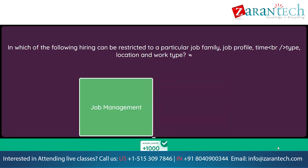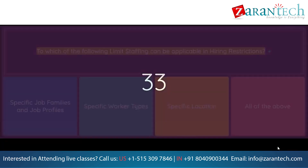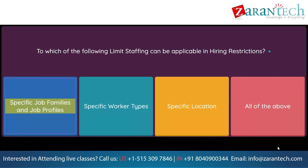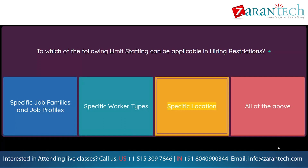To which of the following limits can staffing be applicable in hiring restrictions? Option 1: Specific job families and job profiles. Option 2: Specific worker types. Option 3: Specific location. Option 4: All of the above.